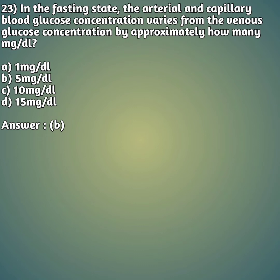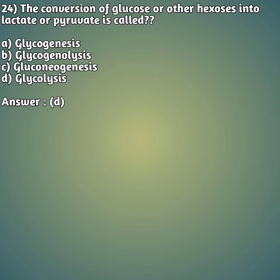Question 24: The conversion of glucose or other hexoses into lactate or pyruvate is called — option A: glycogenesis, option B: glycogenolysis, option C: gluconeogenesis, option D: glycolysis. The right answer is option D, glycolysis — that is, the breakdown of glucose.